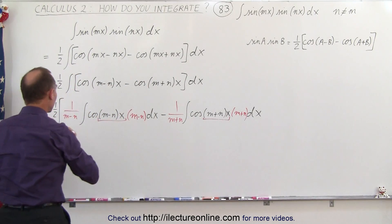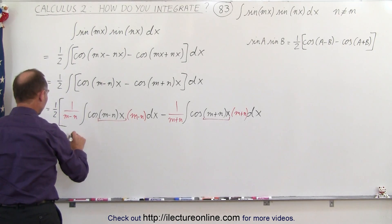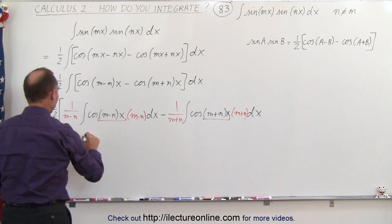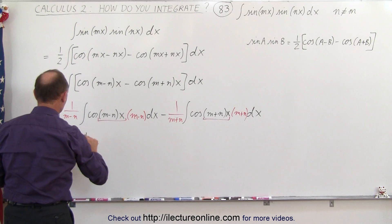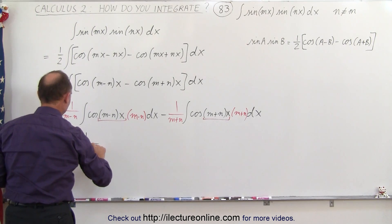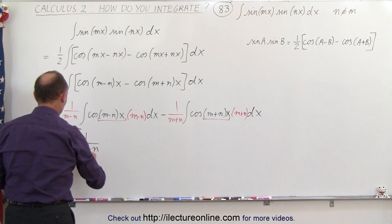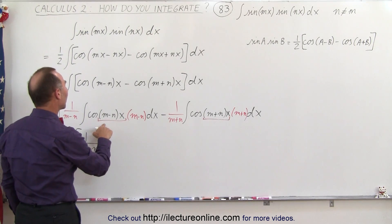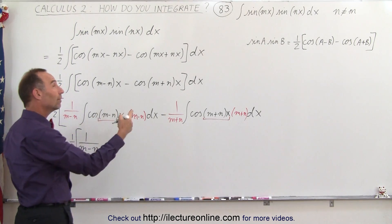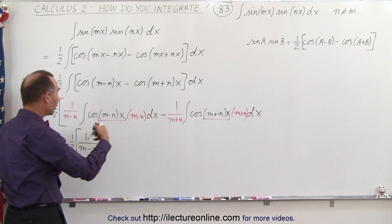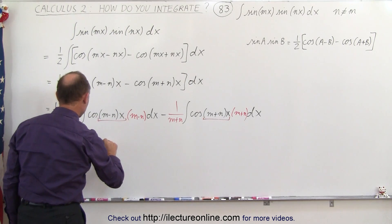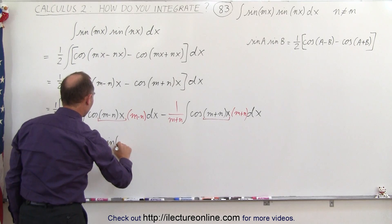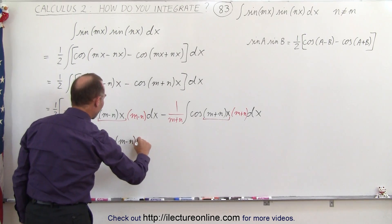Now I'm ready to integrate. So when you integrate, we get this is equal to one-half times one over m minus n. When we integrate the cosine, the derivative of sine is the positive cosine, so the integral is the positive sine. So it would be the sine of m minus n times x.